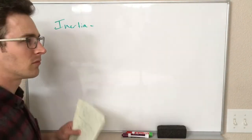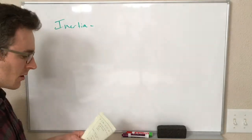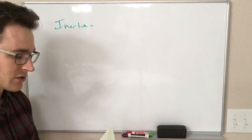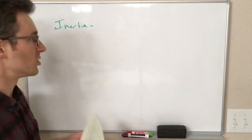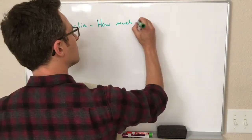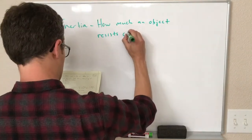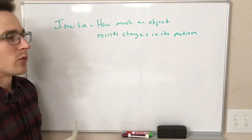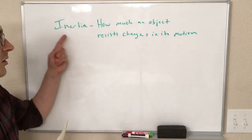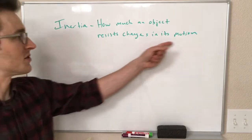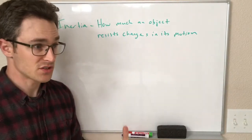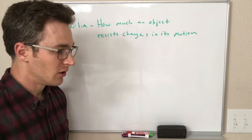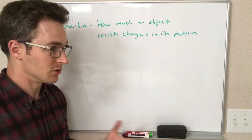Our first definition of inertia is going to be how much an object resists change in its motion. In other words, an object with a lot of inertia strongly resists changes in its motion, which means if it's stopped, it's really hard to get moving, or if it's moving, it's really hard to stop.